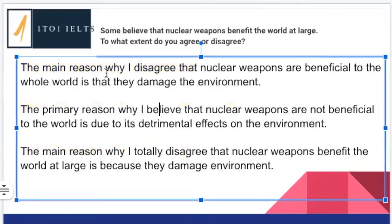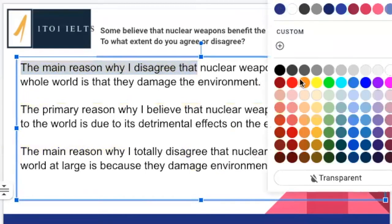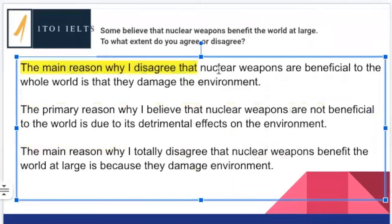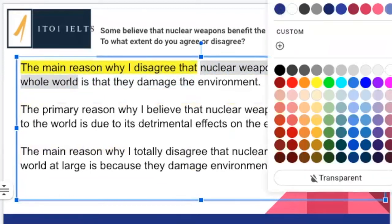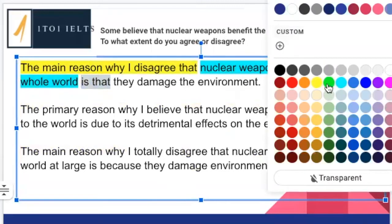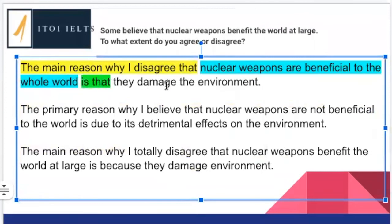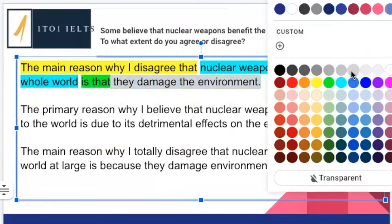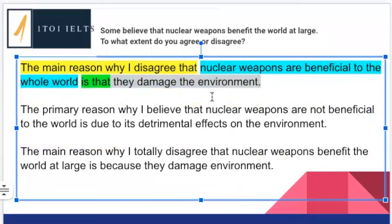The next one: 'The main reason why I disagree that nuclear weapons are beneficial to the whole world' — excellent, very clear what we're referring to. Joining words: 'is that.' Then: 'They damage the environment.' Subject, verb, object — really nice topic sentence. It's following the structure I've shown you, and this would be very good in your exam.